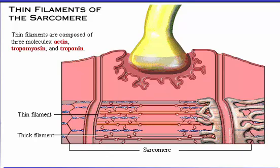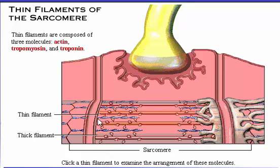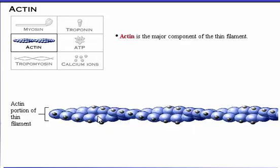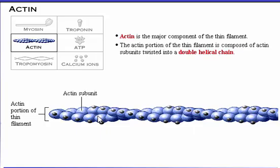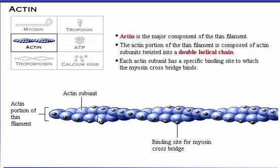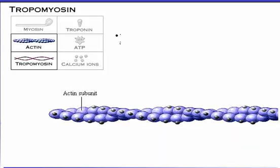Actin is the major component of the thin filament. The actin portion of the thin filament is composed of actin subunits twisted into a double helical chain. Each actin subunit has a specific binding site to which the myosin crossbridge binds. The regulatory protein tropomyosin is also part of the thin filament. Tropomyosin entwines around the actin.